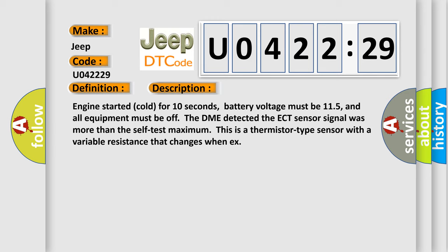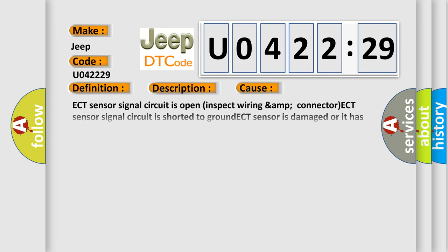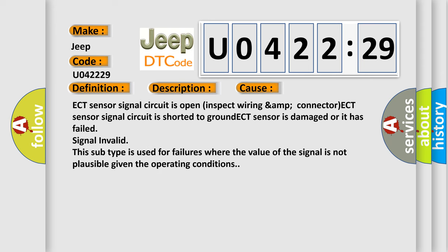This diagnostic error occurs most often in these cases: ECT sensor signal circuit is open, inspect wiring and connector. ECT sensor signal circuit is shorted to ground. ECT sensor is damaged or it has failed. Signal invalid. This subtype is used for failures where the value of the signal is not plausible given the operating conditions.